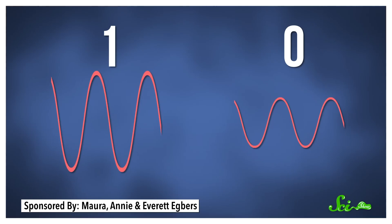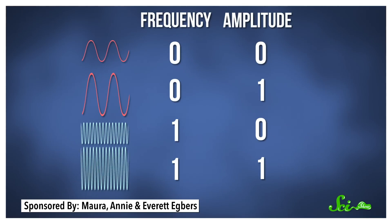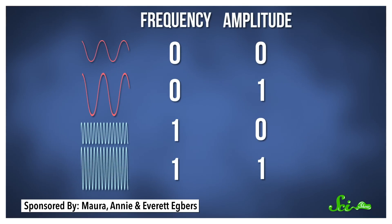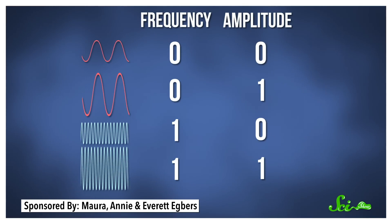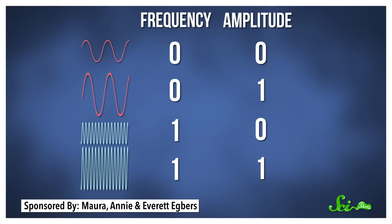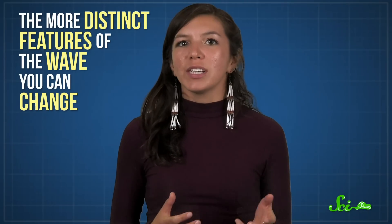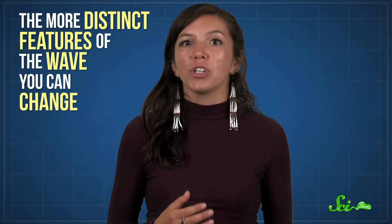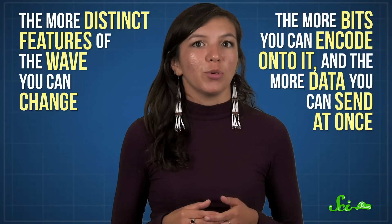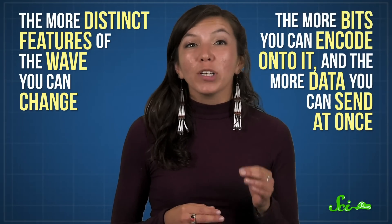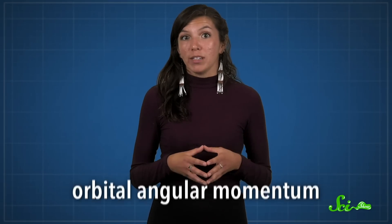You can even do better than that, though. By using both the wave's amplitude and frequency, you can double the rate that you transmit data, sending two bits at a time instead of one. Overall, the more distinct features of the wave you can change, the more bits you can encode onto it, and the more data you can send at once. But there's one feature of light that we haven't gotten control of yet, and it could be one of the most effective—orbital angular momentum.